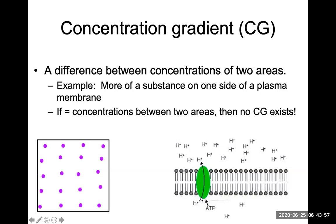This is showing a hydrogen ion being actively transported into an area of greater concentration, and that will require energy or ATP. If this hydrogen ion was going in the opposite direction, that would not require energy because it's going from an area of high to low concentration.